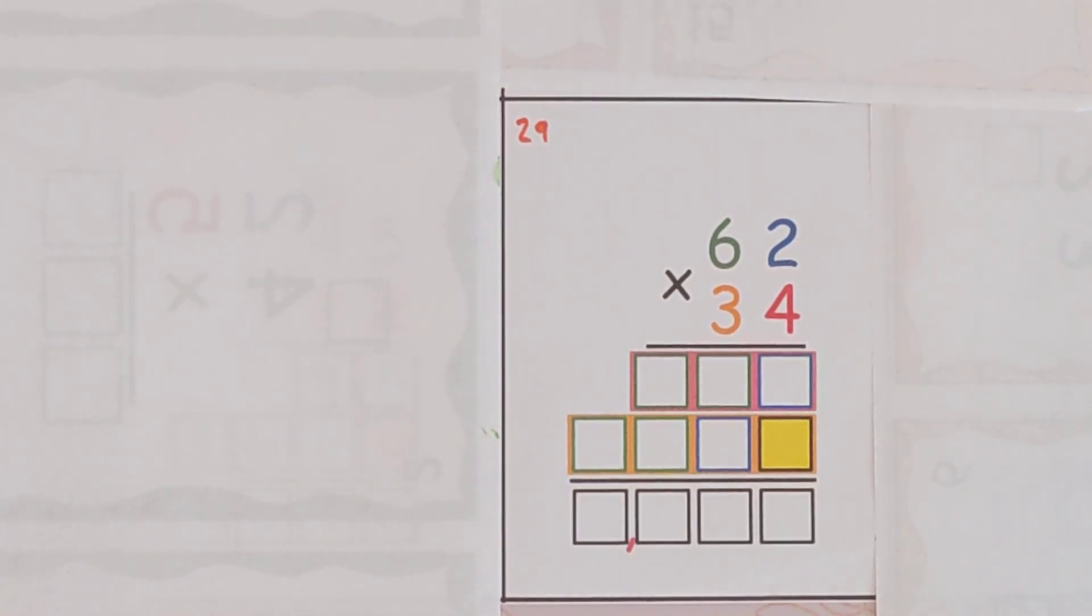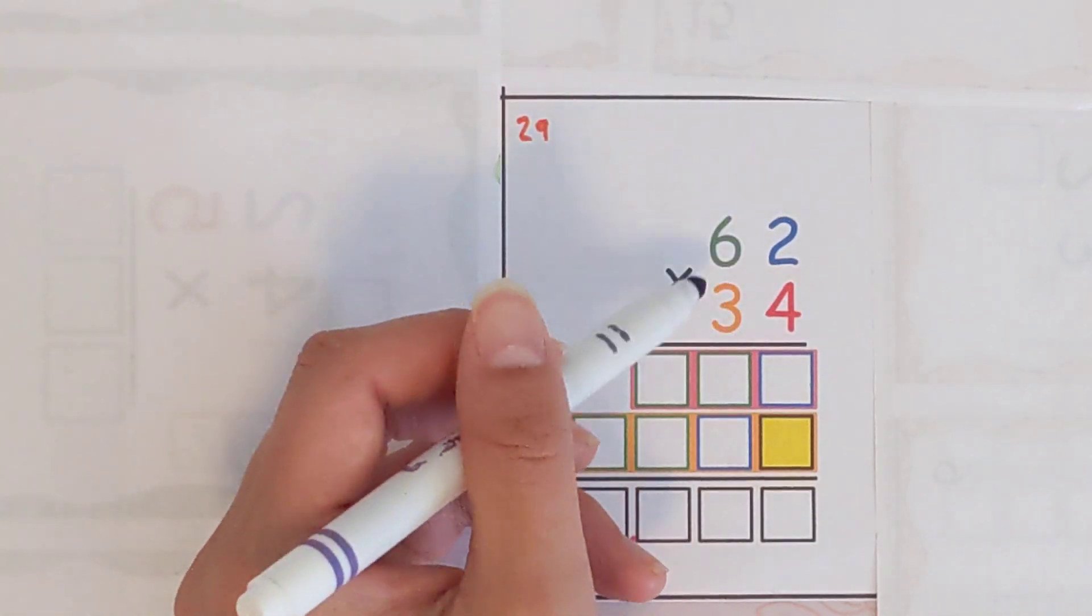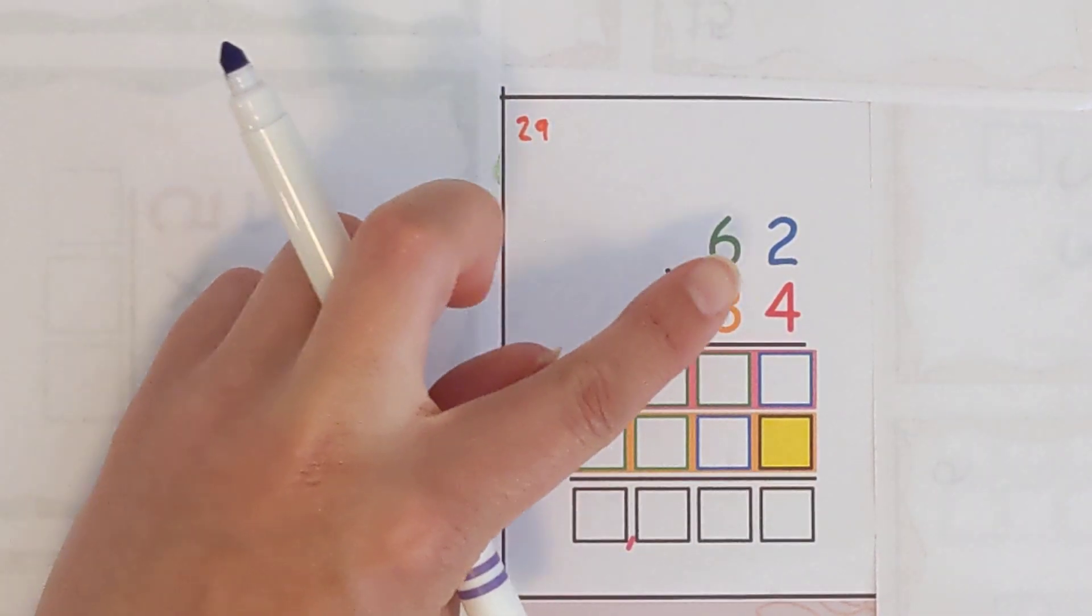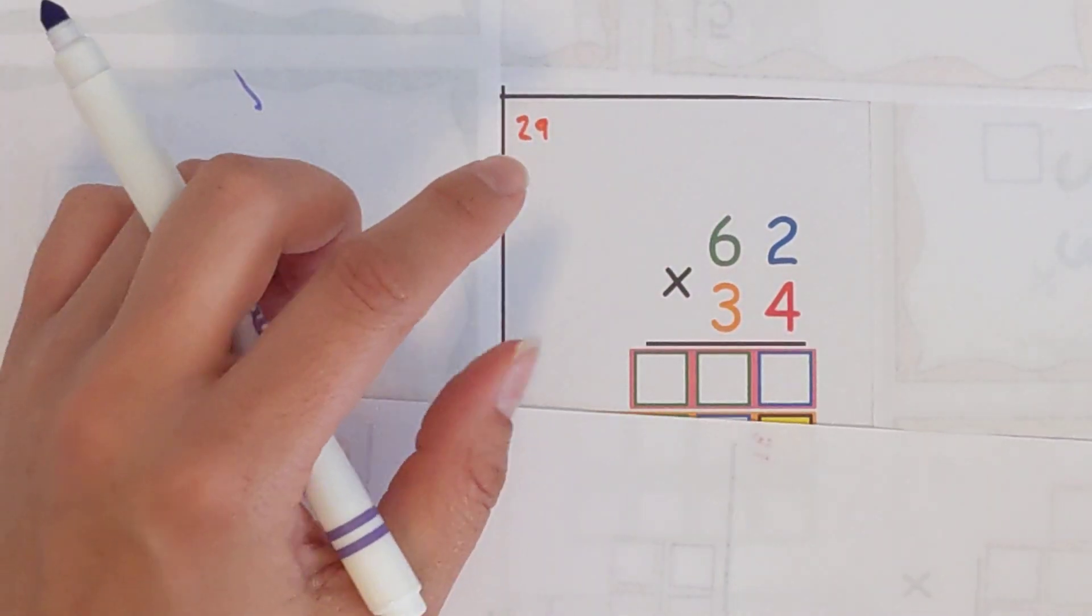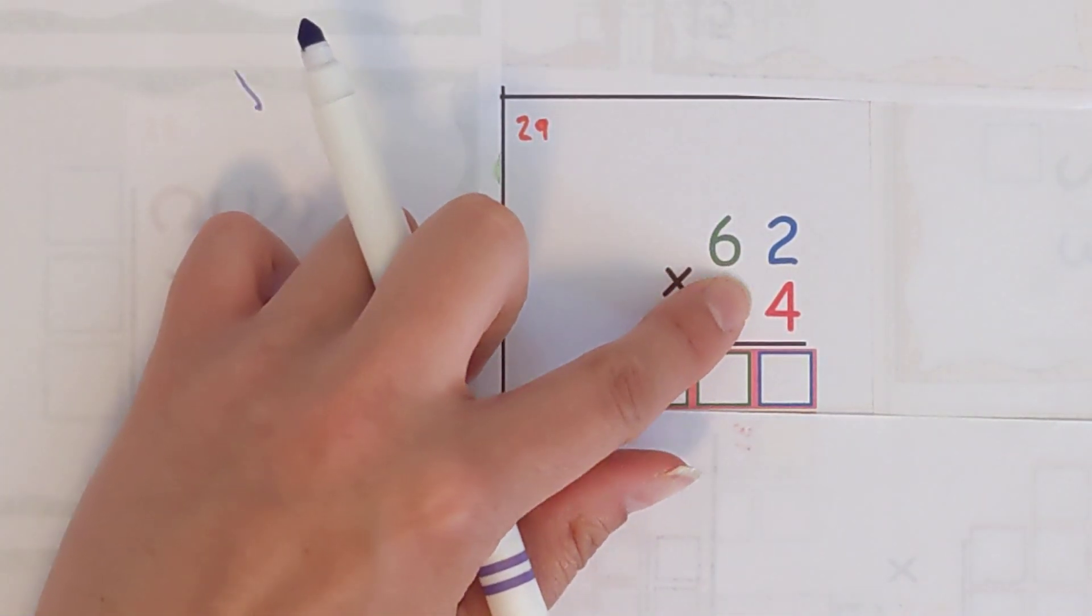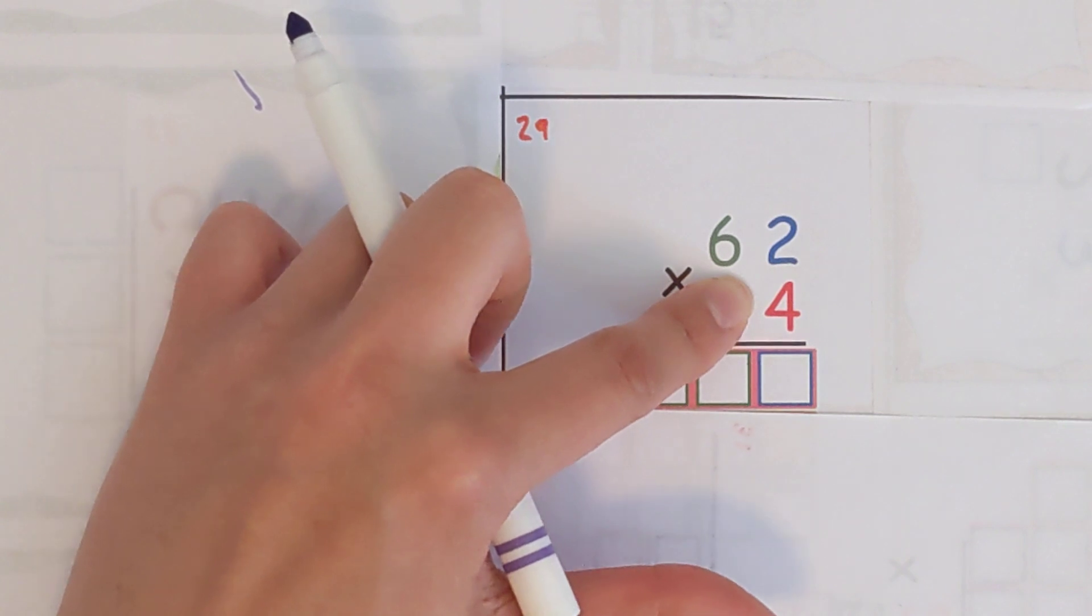Another thing I like to remember is we're going to do the four and then the three. So if you just forget about the three for a sec and forget about all these other rows, we're really just doing 62 times four for our first step.